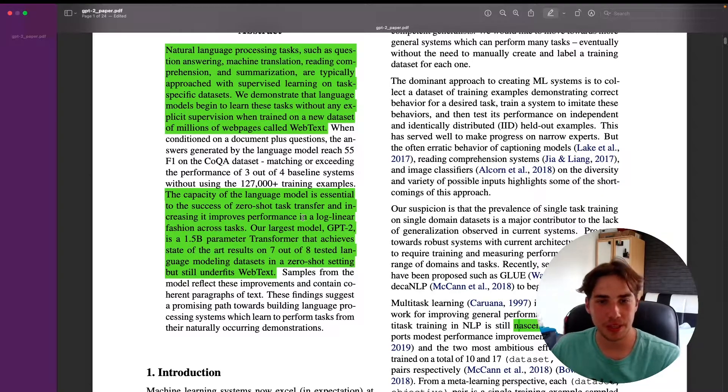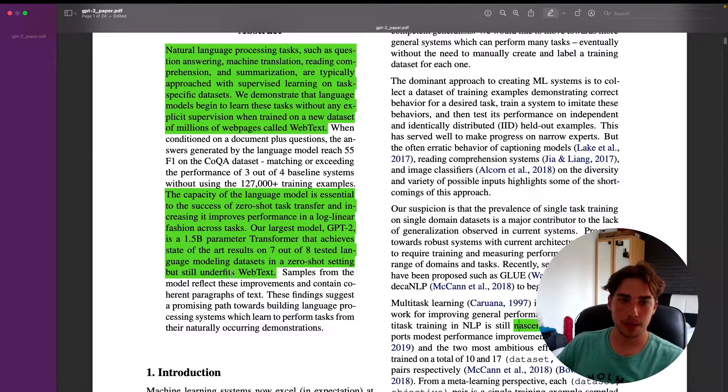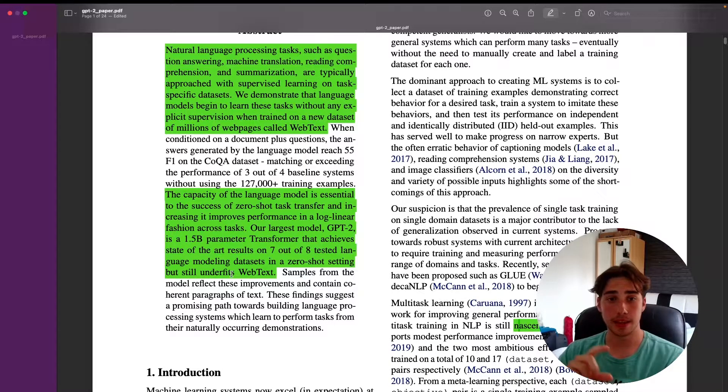I think that's the core idea of the paper. The capacity of the language model is essential to the success of zero-shot task transfer, and increasing it improves performance in a log-linear fashion across tasks. Our largest model, GPT-2, is a 1.5 billion parameter Transformer that achieves state-of-the-art results on seven out of eight tested language modeling datasets in a zero-shot setting, but still underfits.